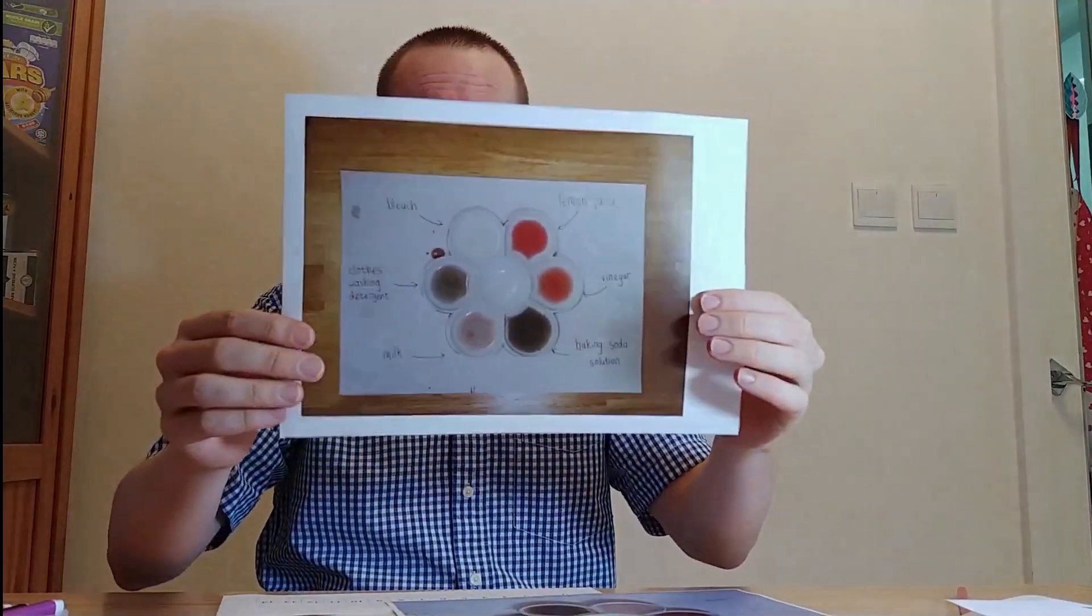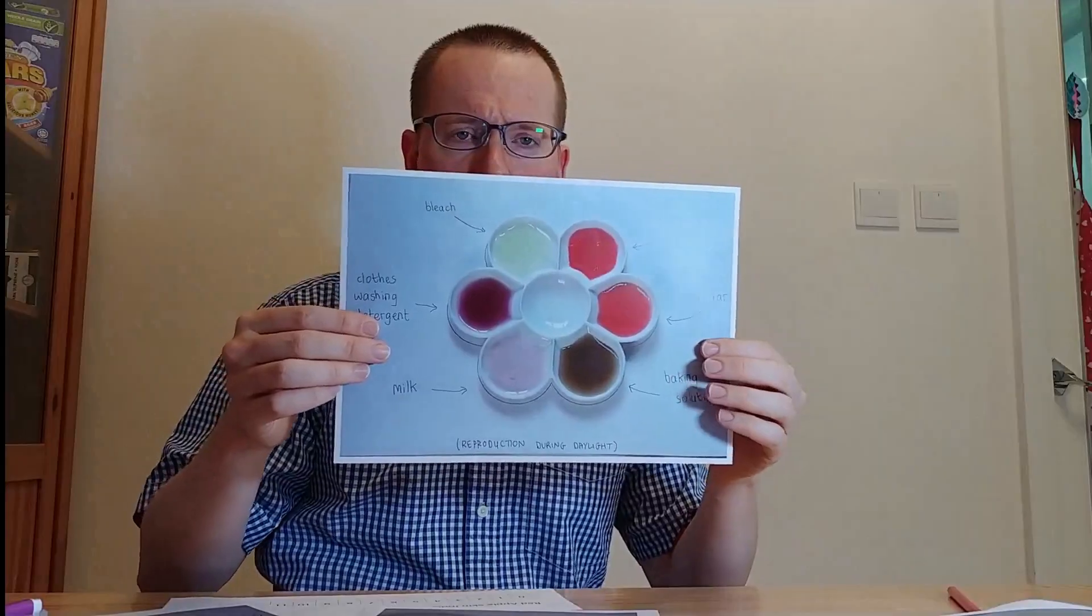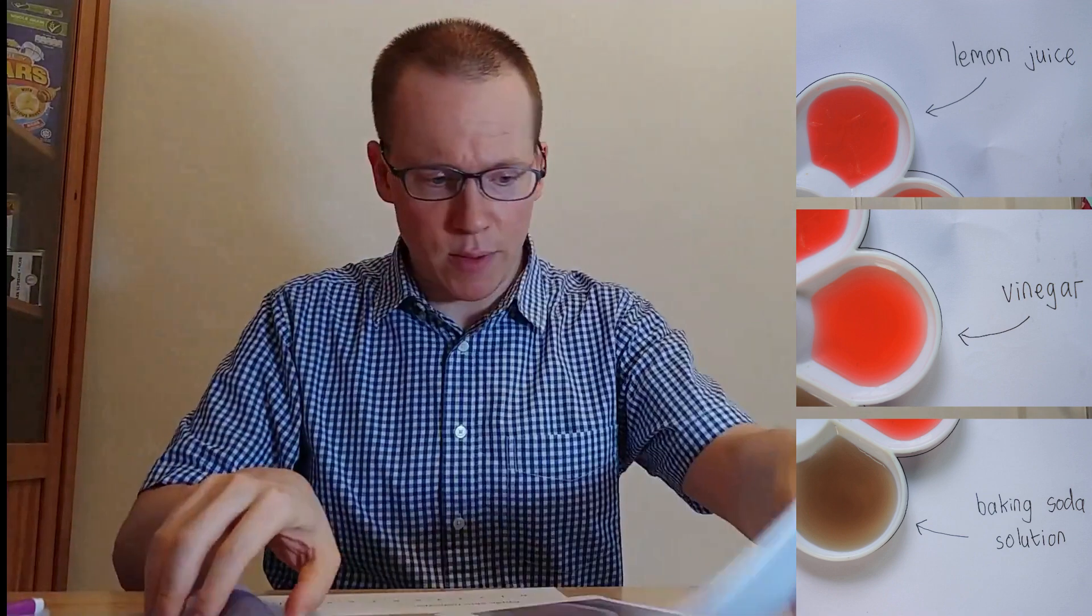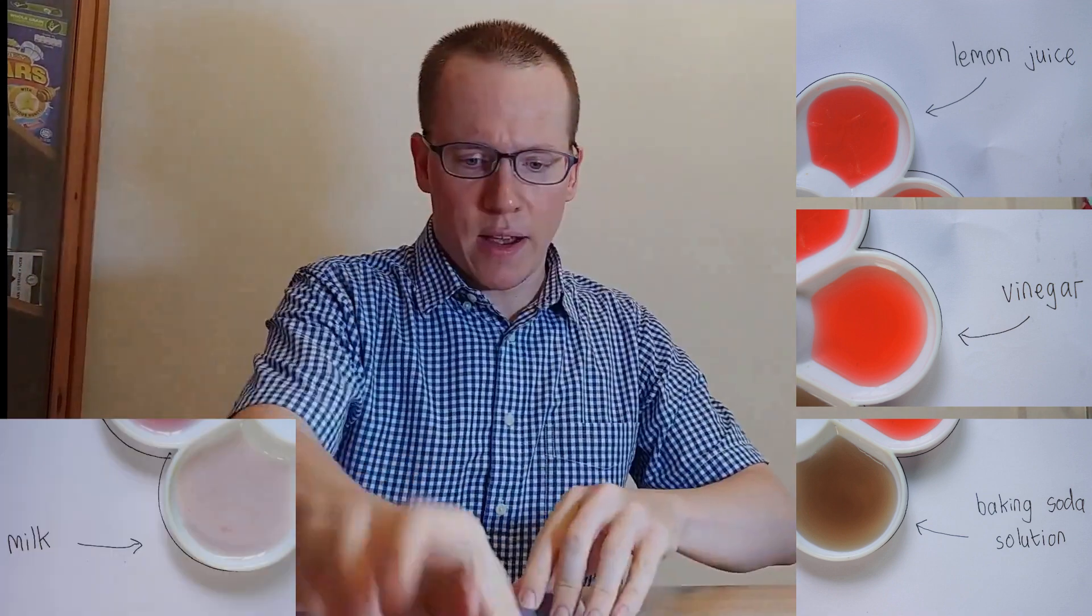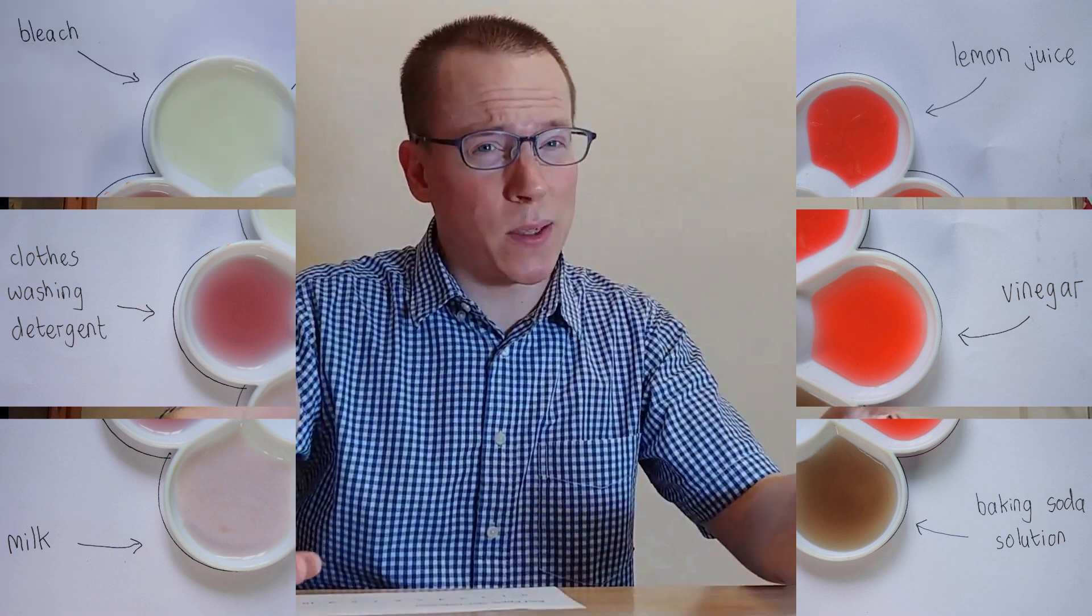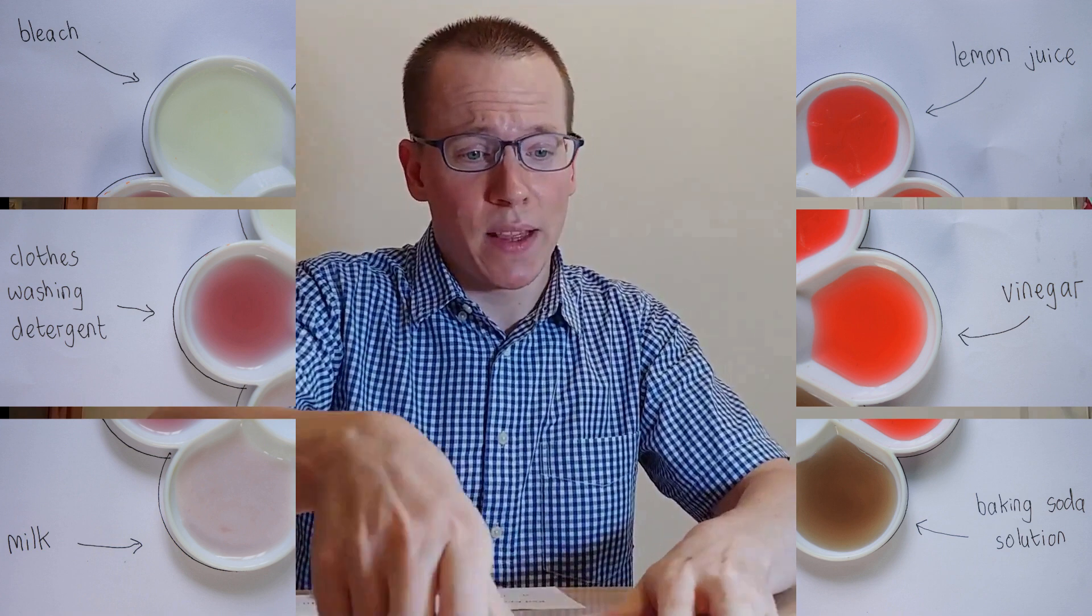Unfortunately I didn't get any good photos from the experiment that Elton and I did and this is one of the best ones that I could get which was not really that great. So the next day in bright sunlight I did the experiment again and I got some lovely results. I also did some zoomed in pictures so you can see for example the lemon juice and the vinegar and the baking soda and the milk and the clothes washing detergent and finally the bleach.